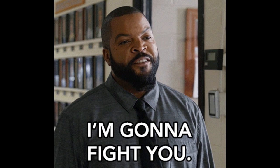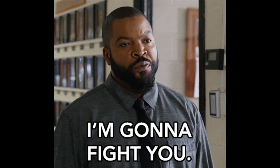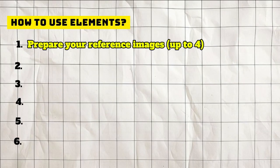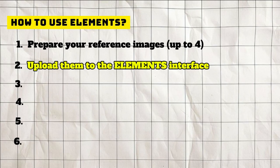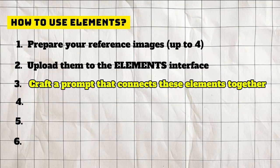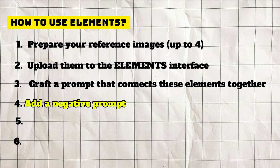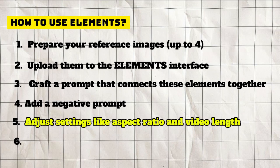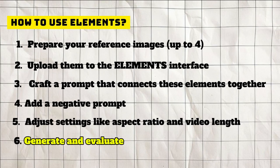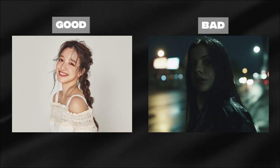I'm going to walk you through the basic workflow for using Elements. First, prepare your reference images — up to four. Then upload them to the Elements interface. Craft a prompt that connects these elements together, and don't forget to add a negative prompt — this is critical. After adjusting settings like aspect ratio and video length, you can finally generate and evaluate. The better your reference images, the better your results will be.